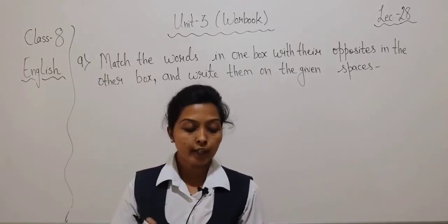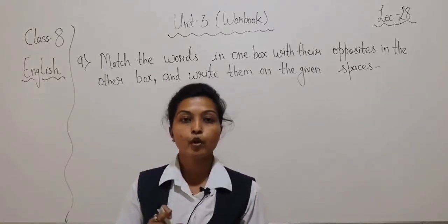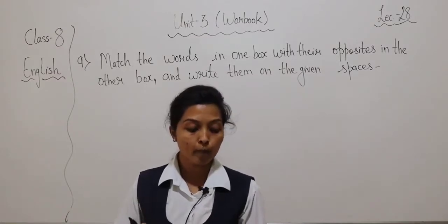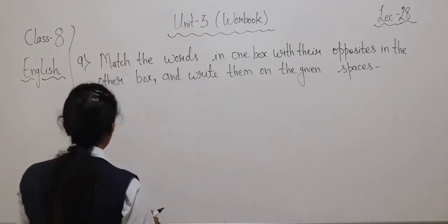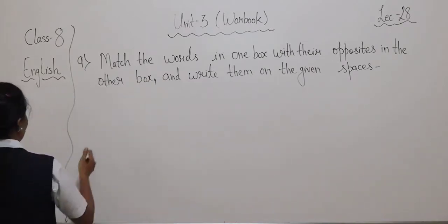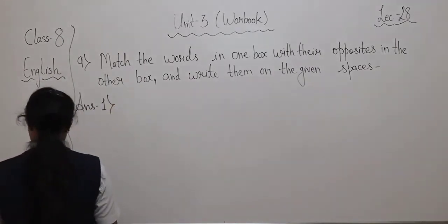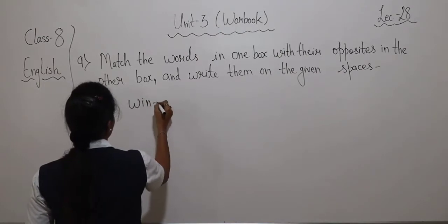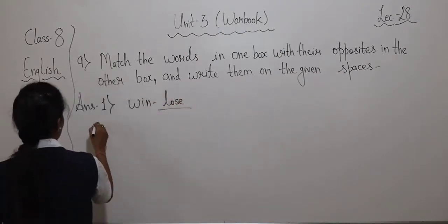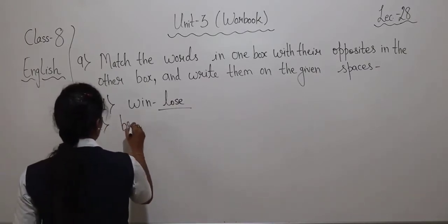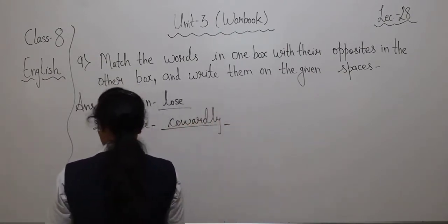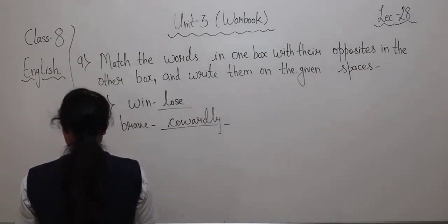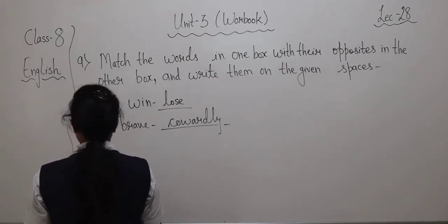Just note down these two boxes from your workbook into your notebook. Copy both boxes in your notebook. On the board I am writing the answers only — I am not writing the two boxes. After writing the two boxes, start writing with me: win — defeat. Then brave — cowardly. We take one by one word from the first box and find the opposite word from the second box.